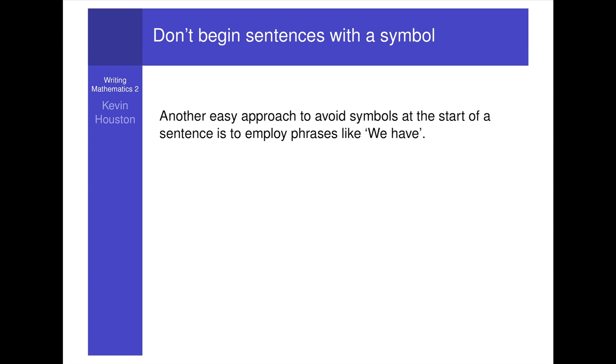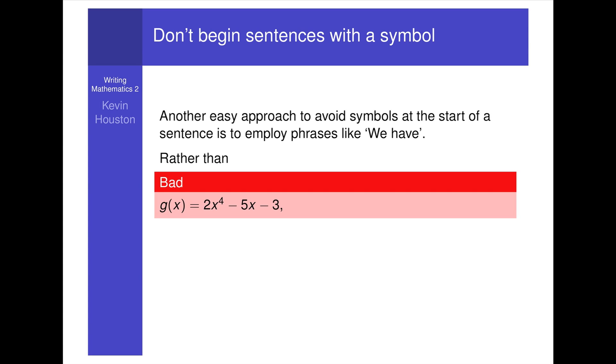Another easy approach to avoid symbols at the start of a sentence is to employ phrases like, we have. So rather than G of X equals 2X to the power 4 minus 5X minus 3, we can write, we have G of X equals blah blah blah.